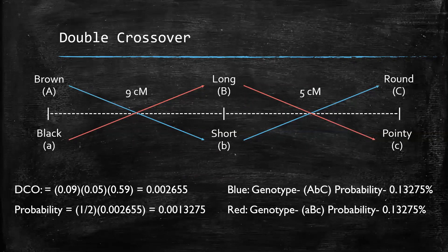Now let's look at the map. The distance between coat color and claw length is 9 cM. The distance between claw length and ear shape is 5 cM. To find our DCO probability, we multiply 9 cM by 5 cM, then multiply by our coefficient of coincidence of 0.59, giving us 0.002655. Since there are two possible double crossover events, we multiply by one half to get 0.0013275 — meaning the probability of getting the gametype big A, little B, big C through a double crossover event is 0.13275%.